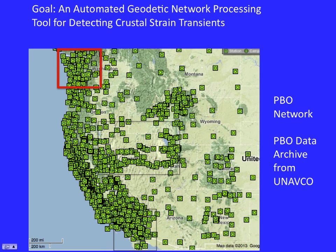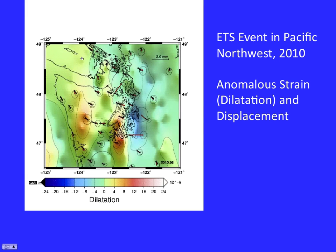We're presently working to monitor the whole plate boundary zone, including the Basin and Range where transients are expected to be very subtle, small, and potentially long-wavelength. Let's look at the Cascadia area, where starting with Megan's work and her colleagues on the PANGA Network, these episodic tremor and slip events have been characterized in great detail. Our automated technique is picking these things up. Looking at the strain evolution in the overlying plate above the subduction zone, an interesting strain field develops that recurs over and over again during these ETS events.